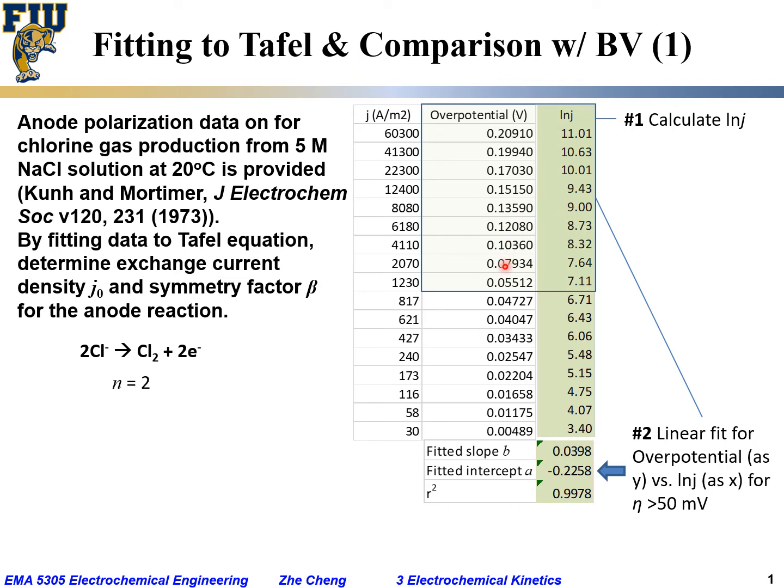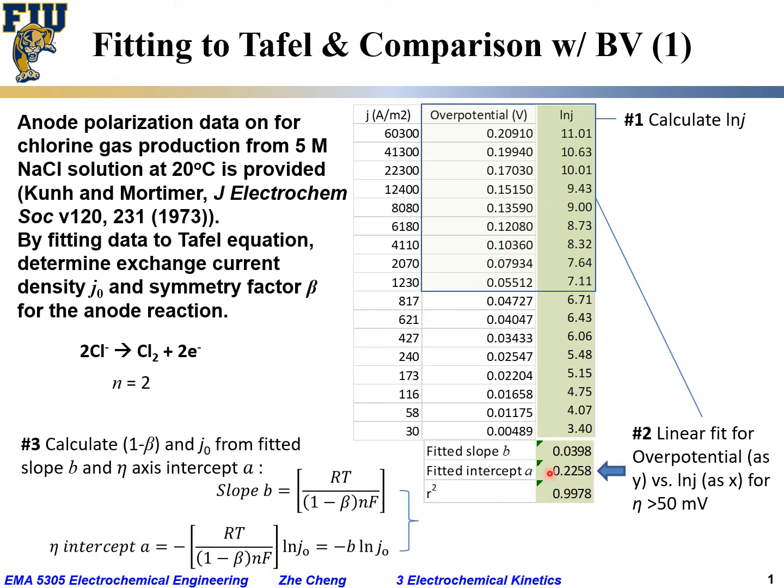So, with this calculated fitted slope B and intercept A, now we can calculate the 1 minus beta and j0. The symmetry factor, which is beta, but 1 minus beta and j0, the exchange current density, from the fitted slope B and the intercept A, using the two equations that we have shown earlier.